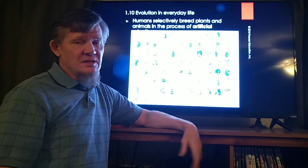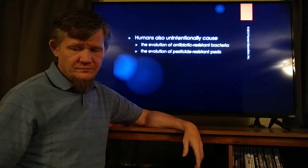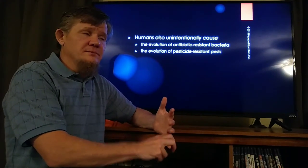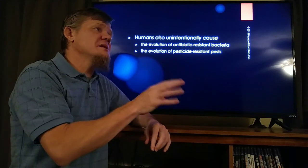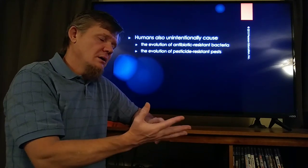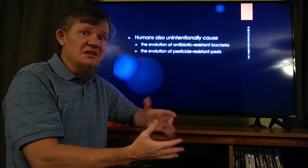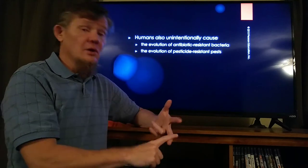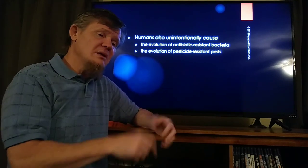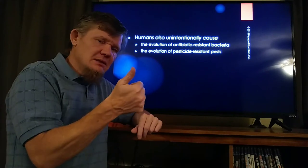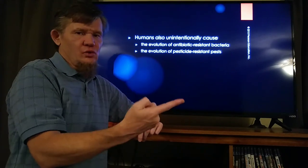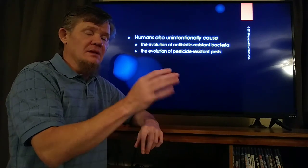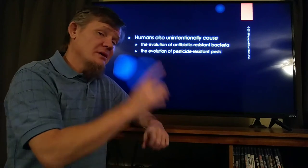Evolution is observable in everyday life. We have deliberately bred any species that we keep: dogs, cats, fish, snakes, lizards, tomatoes, green beans, corn, wheat, soybeans. Any kind of a pet or a food source, we have selectively bred for certain traits. That is artificial selection. That was on purpose.